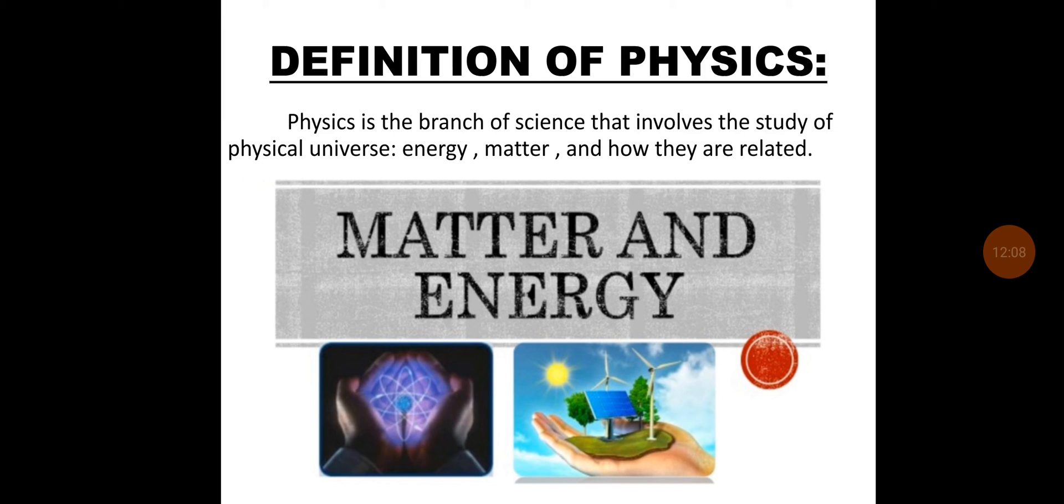However, energy, the ability to do work is called energy. There are different forms of energy which are interconvertible to each other. For example, light energy, sound energy, heat energy, mechanical energy, electrical energy, chemical energy. There are different forms of energy. The study of this energy and the matter and their mutual relationship, it is called physics.